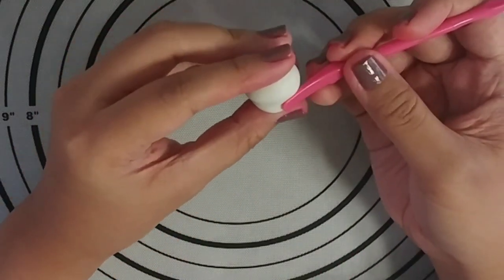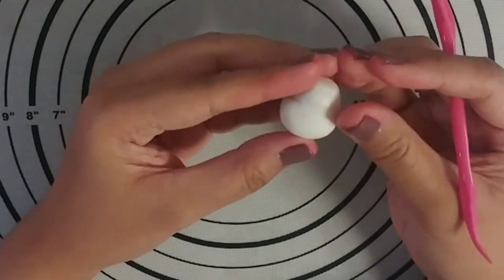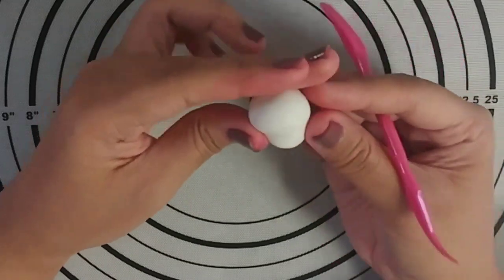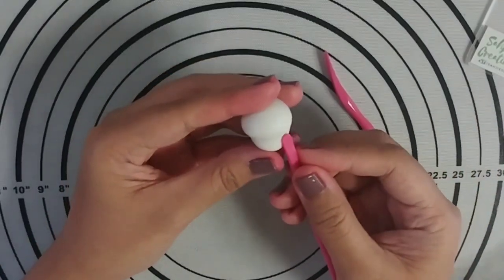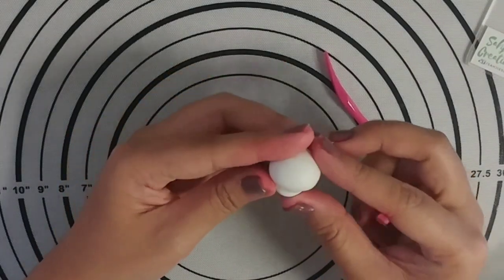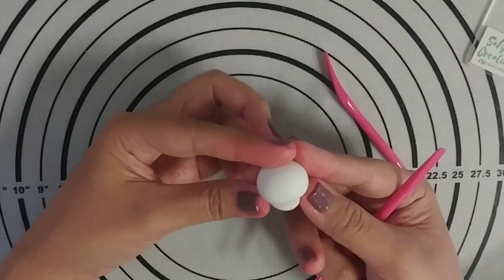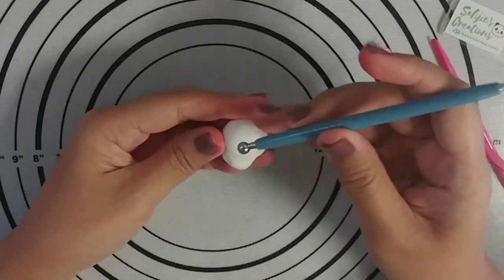With any flat tool, go ahead and sculpt the cheekbones. Then with my ball tool, I'm making the eye sockets.